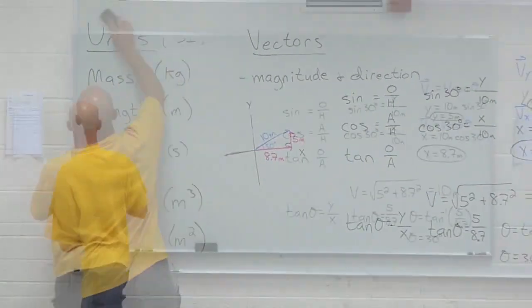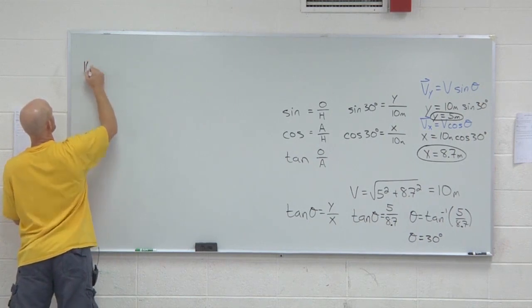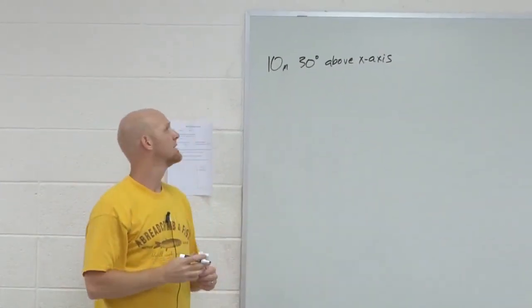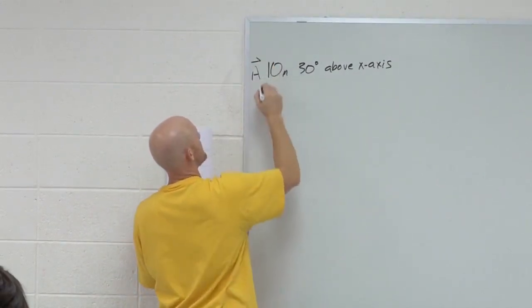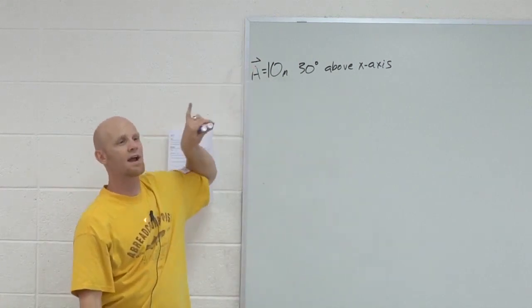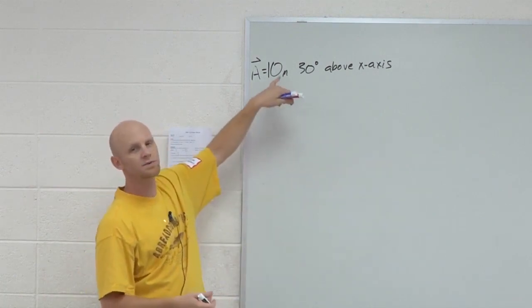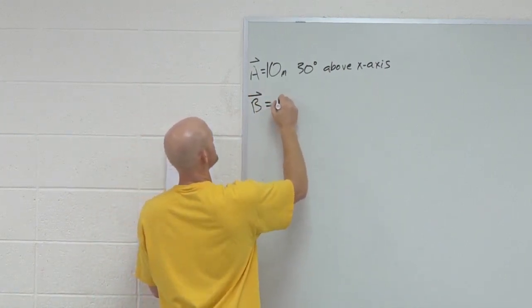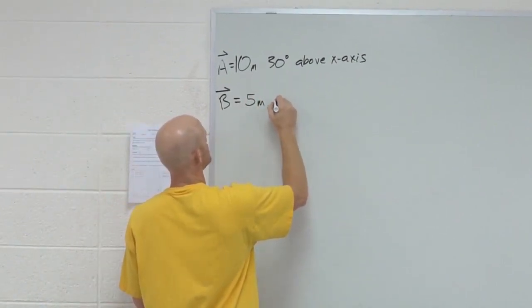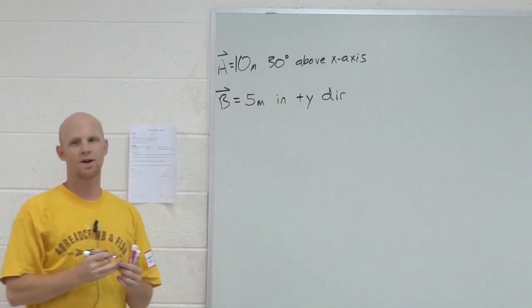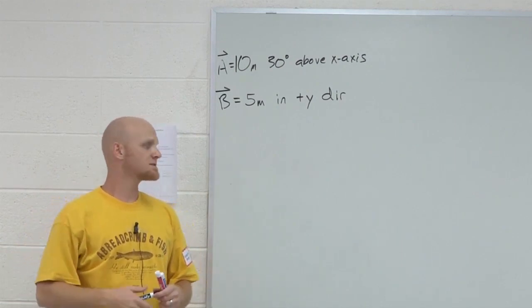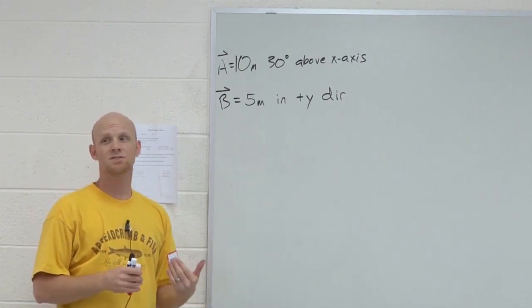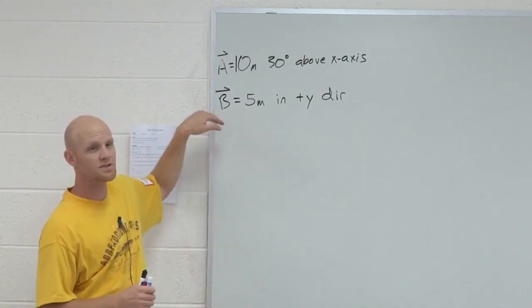Let's add a couple of vectors together. Let's say you had vector A — the same vector, 10 meters, 30 degrees above the x-axis. We usually signify a vector by putting an arrow above whatever variable it is. And let's say I have another vector B, equal to 5 meters in the positive y-direction. The question is: what is A plus B? The resultant vector — when we add or subtract vectors — should reflect both magnitude and direction.